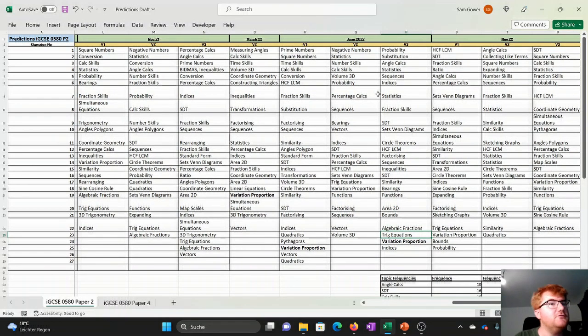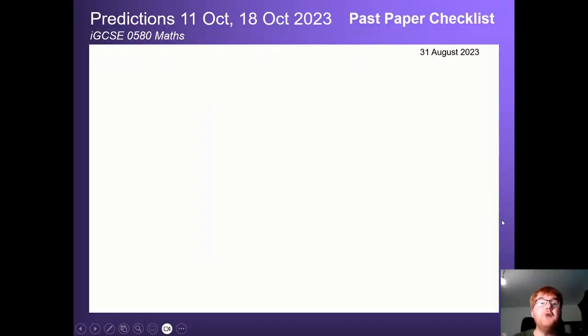Okay, so gone through all the predictions for this particular set of exams in October 11th and the 18th. And to really get your revision absolutely supercharged, check out the video in front of you because I've made an IGCSE maths past paper checklist. That'd be really good for you to make sure you organize. Have you completed all the past papers and you can tick it off as you go along? I also include all the video links to all of the IGCSE playlists. So if you're looking to revise variation proportion, you just click on that link and it will take you through.